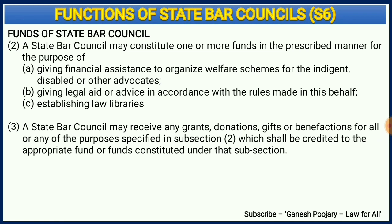While subsection 1 of section 6 focuses on the functions of the state bar council, subsection 2 focuses on how funds are utilized. Funds need to be utilized for giving financial assistance to indigent, disabled or other advocates as per the rules made by such bar councils, for giving legal aid or advice, and for establishing law libraries. Subsection 3 is about receiving grants or funds — for the purpose of welfare schemes for indigent or disabled advocates, or for legal aid or establishing law libraries, a state bar council can receive grants, donations, gifts, etc. as per section 6(3).